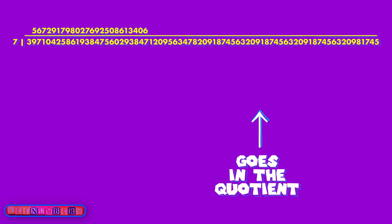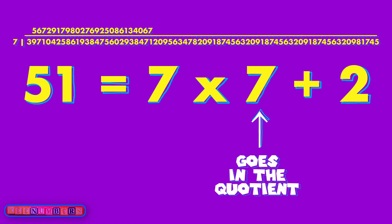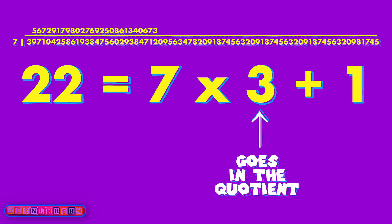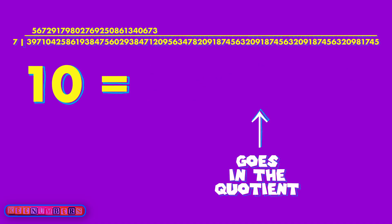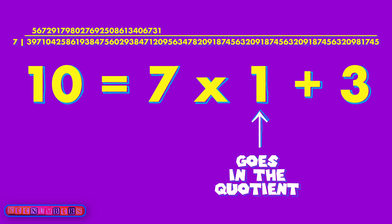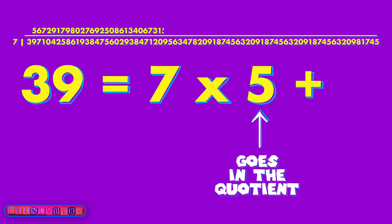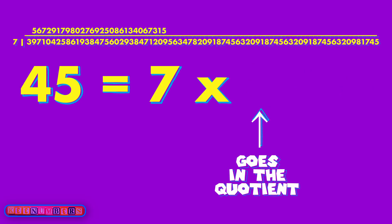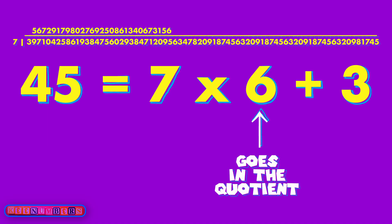Pull down the one — you've got 49 and two, so put the seven upstairs. You've got two left over; pull down the two, so you have 21 plus one — put that three upstairs. You have one left over; pull down the zero. Seven goes into that one time; you've got three left over, so the one goes upstairs. The three starts your new process — pull down the nine and you get 35 and four. Five goes upstairs; you have four left over, so pull down the five. You get 45, which is 42 plus three — the six goes upstairs, and you keep going.